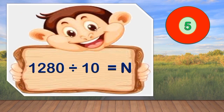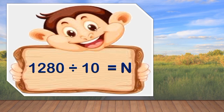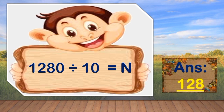Finally, number 5. 1280 divided by 10 is equal to N. Your 5 seconds starts now. Go! Time is up. And the correct answer, children, is? Fantastic! It's 128.